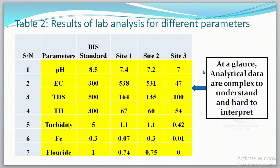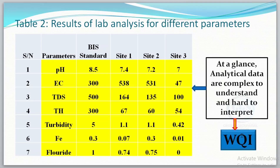However, if you look at these analytical results, you will see that they are too complex to understand or interpret at a glance. For example, if I say total dissolved solids value for Site 1 is 164 milligrams per liter — what does that mean? It would be very complex for a layman to interpret or understand what these analytical results mean in terms of water quality. This is why Water Quality Index comes in — to make it easy to understand at a glance and give us a better understanding of water quality.